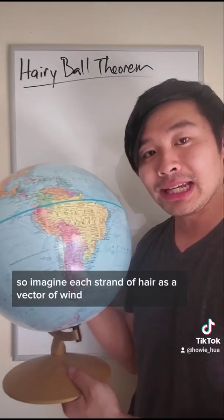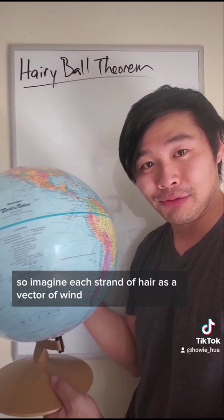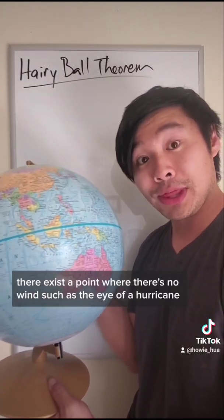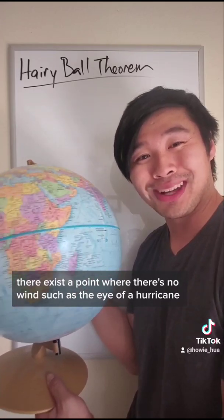So imagine each strand of hair as a vector of wind. The hairy ball theorem states that at any given time, there exists a point on earth where there's no wind, such as the eye of a hurricane.